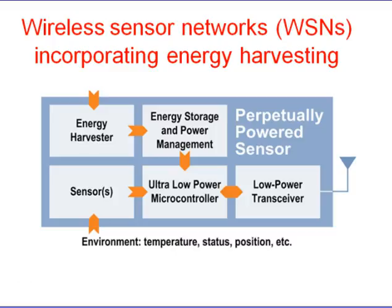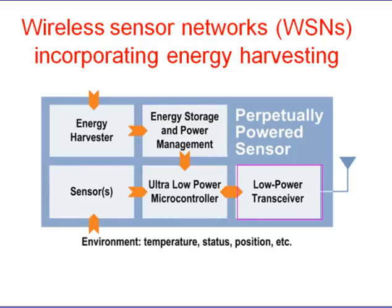The block diagram of a Wireless Sensor Network (WSN) consists of five major components: the energy harvester, energy storage element and power management circuitry, sensor, ultra-low-power microcontroller, and low-power transceiver. The energy storage element is required to accumulate energy for usage when the energy harvester is not harvesting — for example, a solar panel system during the night. The energy storage element must be rechargeable.